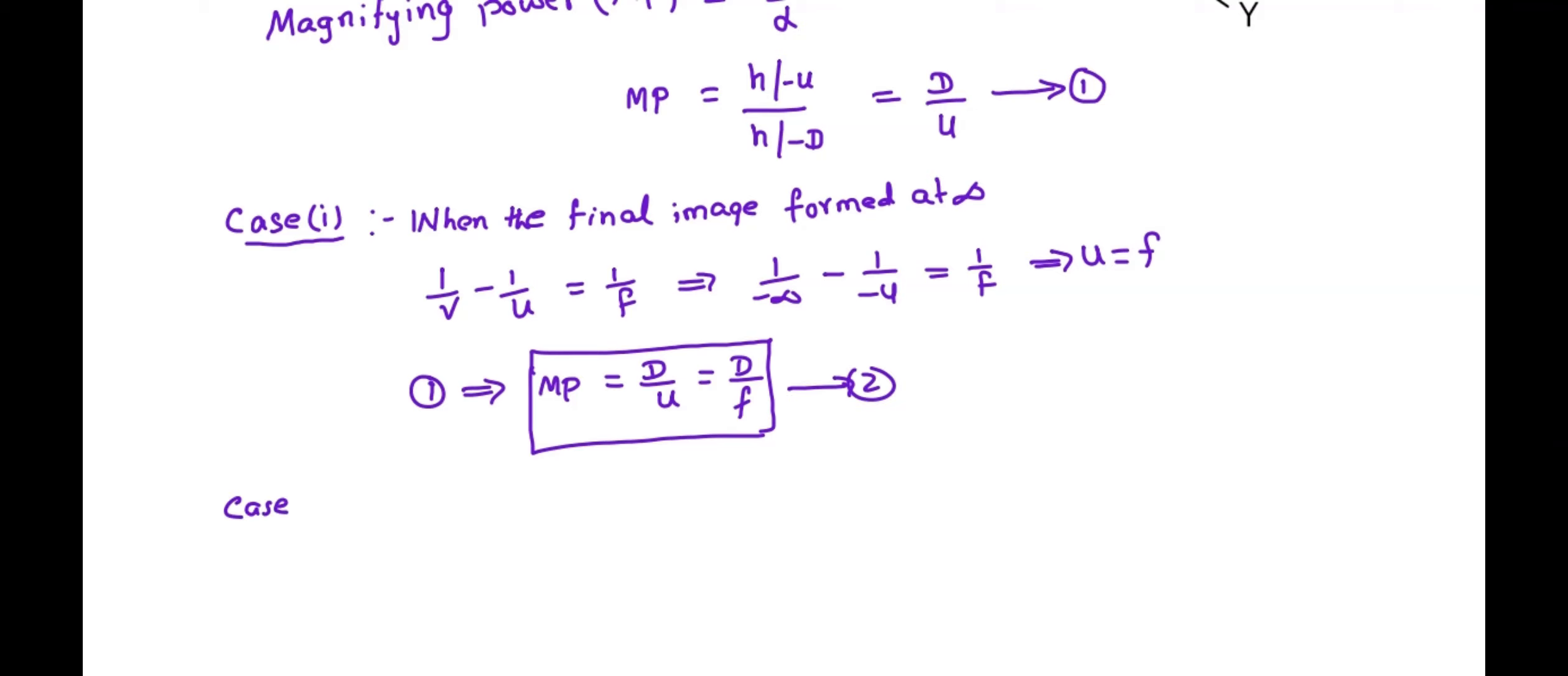Next, case 2: when the final image is formed at d, that is v is equal to minus d according to sign convention. Then again, if you are using the lens equation, 1 by v minus 1 by u is equal to 1 by f. From this, 1 by minus d minus 1 by minus u is equal to 1 by f.